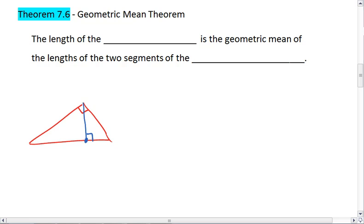What this first theorem we have here is Theorem 7.6, the geometric mean theorem, tells us is that the length of the altitude is the geometric mean of the lengths of the two segments of the hypotenuse.